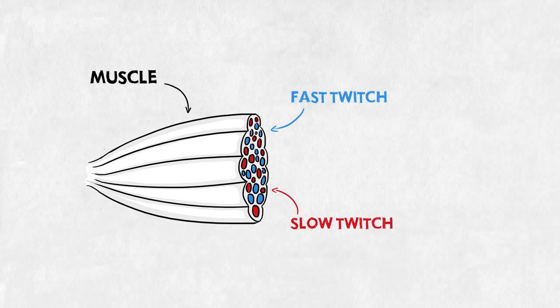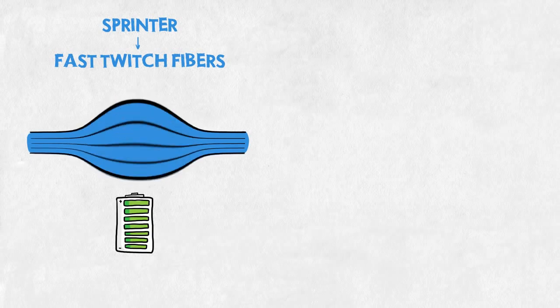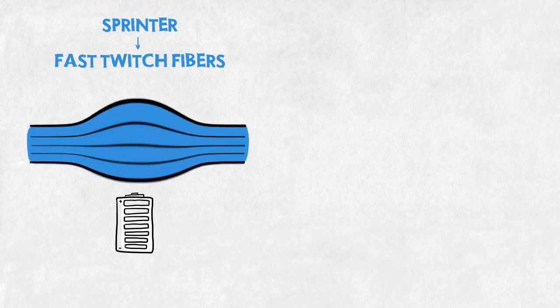Fast twitch and slow twitch. A sprinter will primarily train his fast twitch fibers. These react instantly and work super fast, but quickly run out of power. When trained, fast twitch fibers naturally become big and heavy.